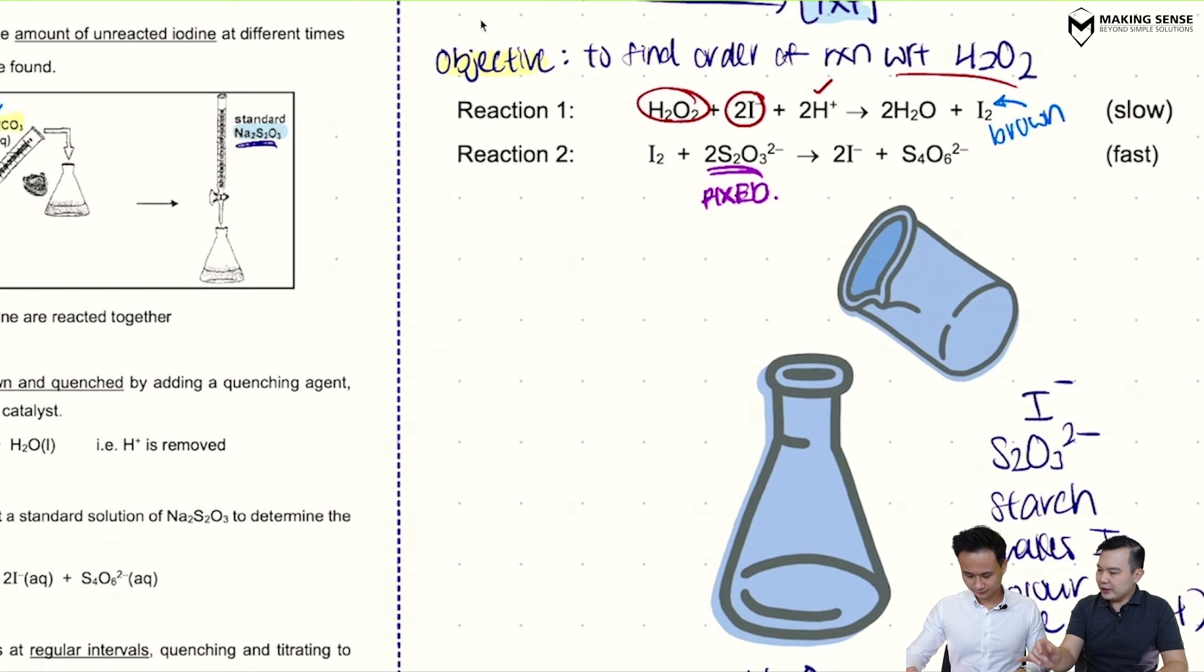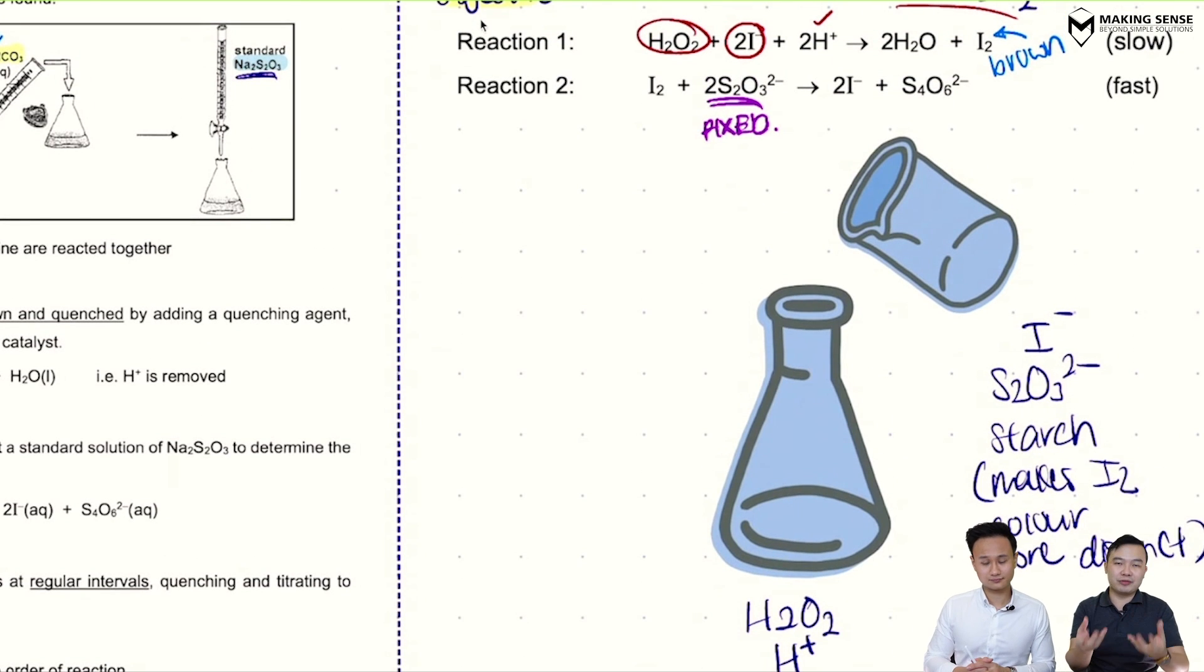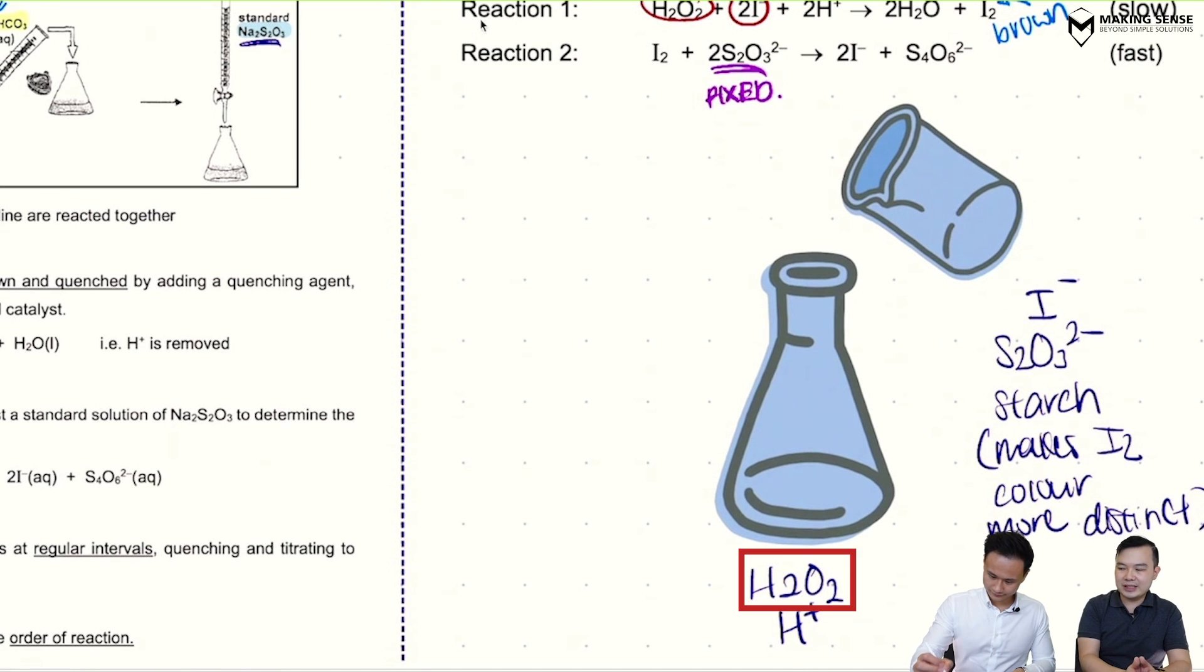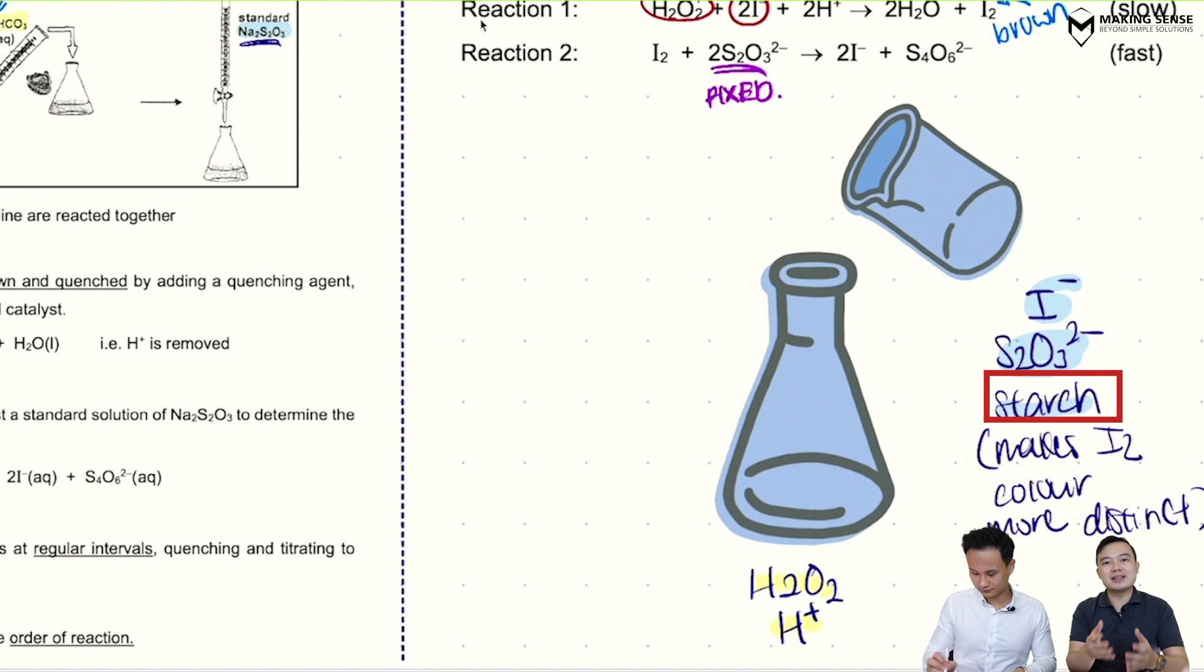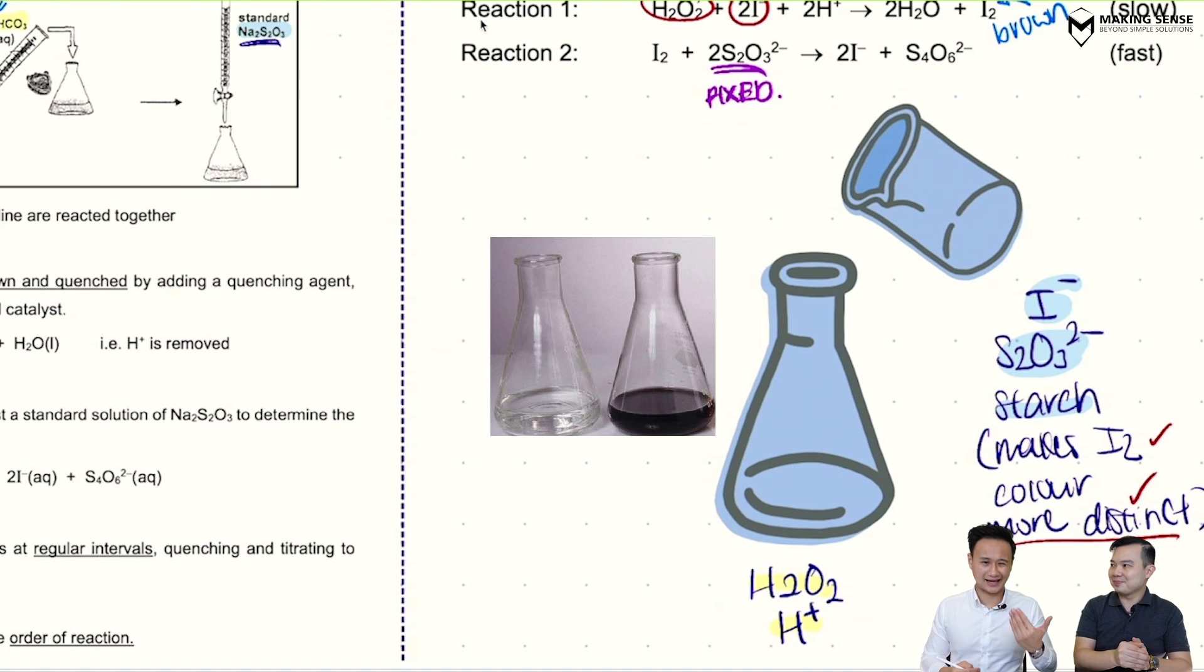So in the experiment itself, let me briefly run you through. The conical flask and the beaker are going to contain two different things. When I mix them together, then the reaction will begin. In the conical flask is going to be my hydrogen peroxide as well as my acid to acidify the environment. Inside the beaker at the top you contain your iodide, thiosulfate, and starch as well. Starch is present because it helps to make the color change much more distinct. Starch reacts with iodine to give a blue-black, a dark color which is very distinct, so later on you can see this very clearly.